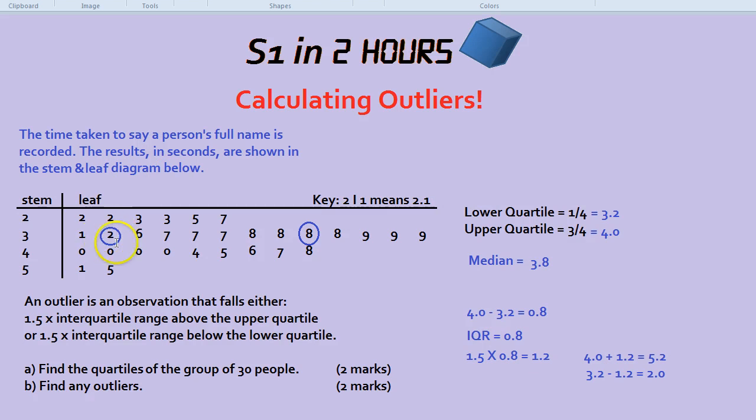This was the eighth person. So 9th, 10th, 11th, 12th, 13th, 14th, 15th, 16th, 17th, 18th, 19th, 20th, 21st, 22nd, 23rd. So this guy is the upper quartile, 4.0.